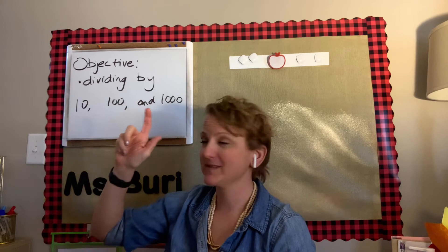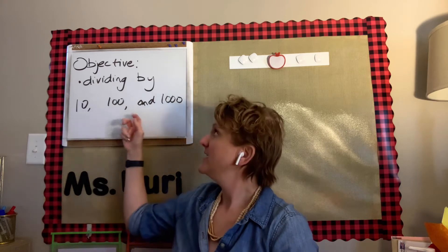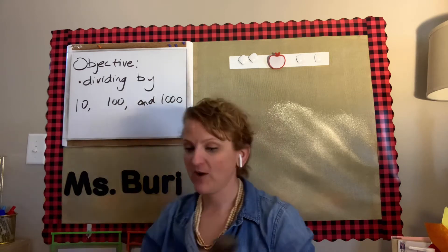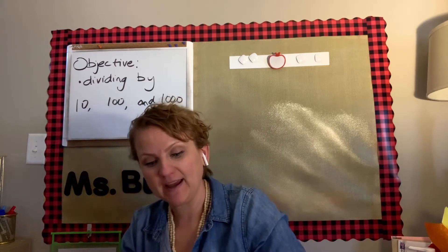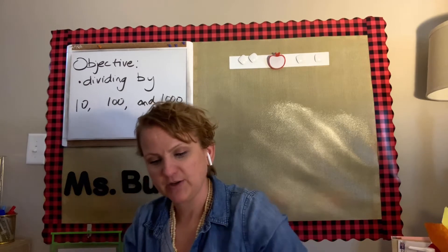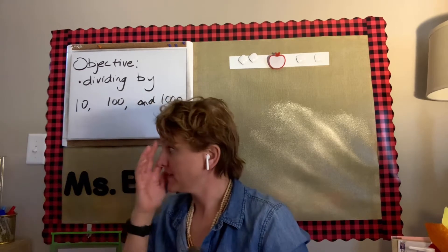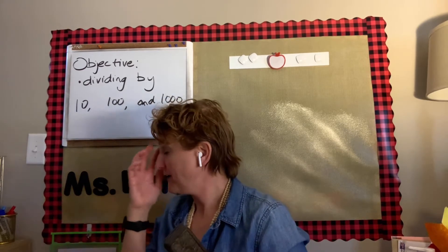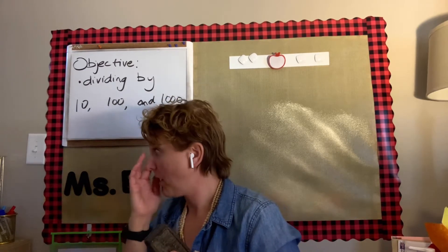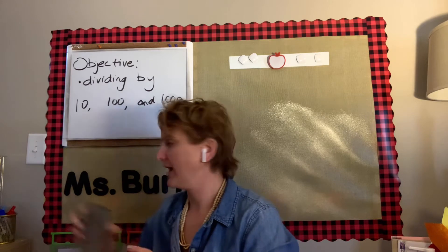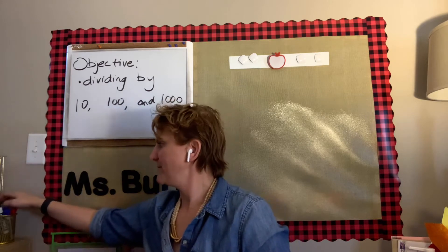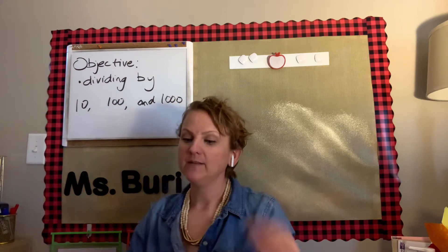We're actually going to look at the inverse operation. We worked on multiplying by 10, 100, 1,000 and multiples of. So today we're going to work on dividing by 10, 100, 1,000, and then tomorrow we're going to look at multiples of. So it'll be a similar formula.